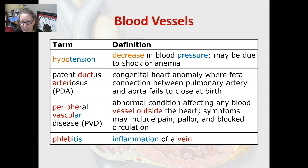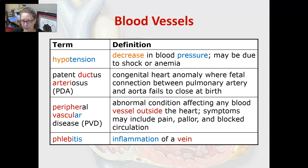Peripheral vascular disease is an abnormal condition affecting any blood vessel outside of the heart. Symptoms may include pain, pallor, and blocked circulation. Phlebitis is inflammation of a vein. Polyarteritis is inflammation of several arteries.